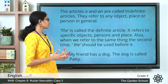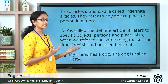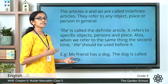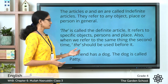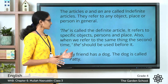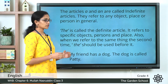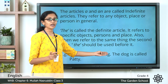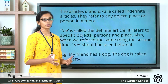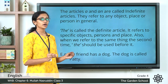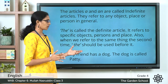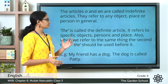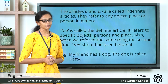The article 'the' is called the definite article because it is used to indicate something specific. It is also used when you are referring to the same thing a second time. For example: my friend has a dog — the dog is called Patty. Here you are referring to the same dog twice, so the second time you use the article 'the' before the word dog to indicate that particular dog named Patty. I hope you remember this.